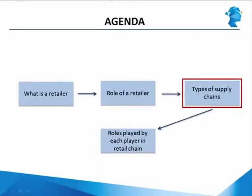We have defined what a retailer is and the role that a retailer plays in a society. Now let us take a look at the types of supply chains that exist and help the retailer in getting the items from the manufacturer's factories to the stores near the consumers.